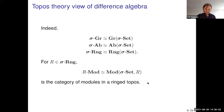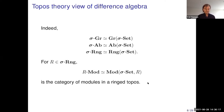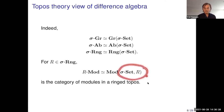Viewed this way, the previous categories become internal: sigma-groups become group objects in difference sets, sigma-rings become ring objects in difference sets, and if we fix a difference ring, the category of R-modules becomes the category of modules on a ringed topos.